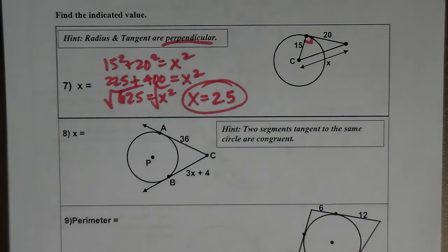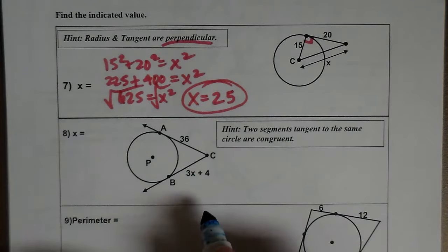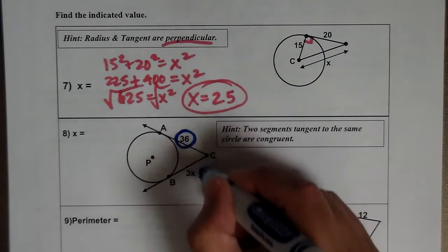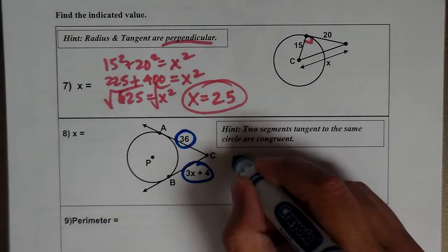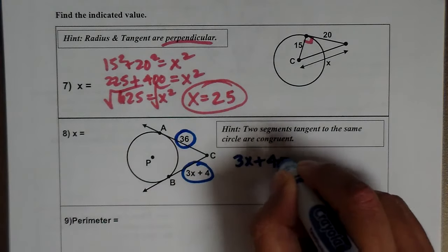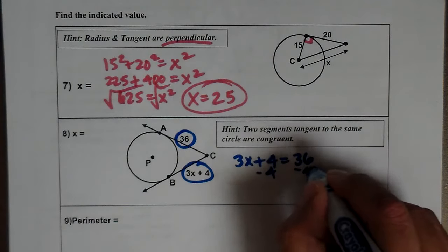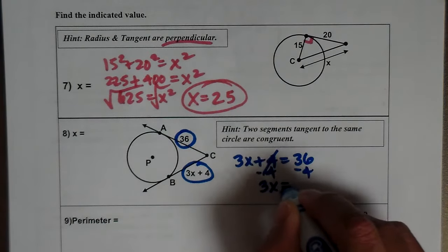Alright, for the next one, I've got two tangents. If two tangents are tangent to the same circle, they're equal. Okay, those two tangents are equal, so 3x plus 4 is equal to 36. I'm going to subtract 4, so 3x equals 32.